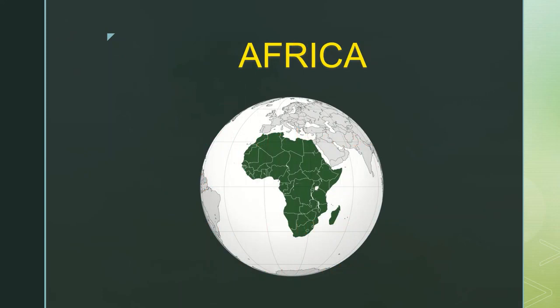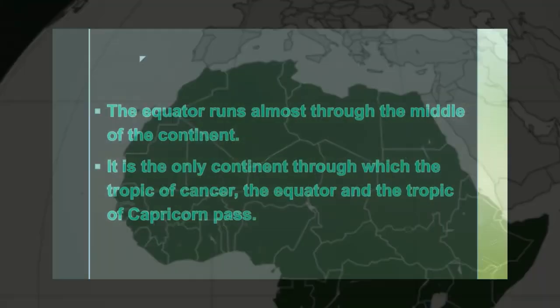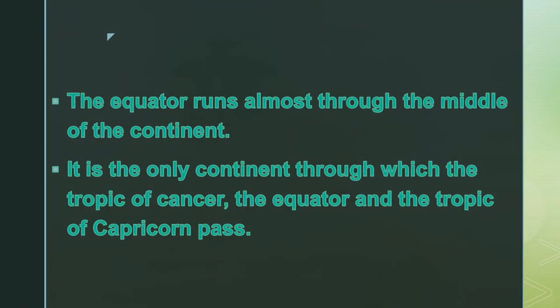Next is Africa. Africa is the 2nd largest continent after Asia. It lies between 37 degrees north and 35 degrees south latitudes and between 18 degrees west and 51 degrees east longitudes. The equator, or 0 degree latitude, runs almost through the middle of the continent. A large part of Africa lies in the northern hemisphere.